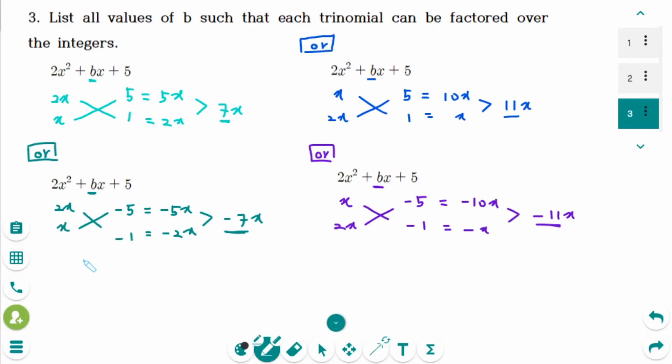By this, b can be 7, minus 7, 11, and minus 11.